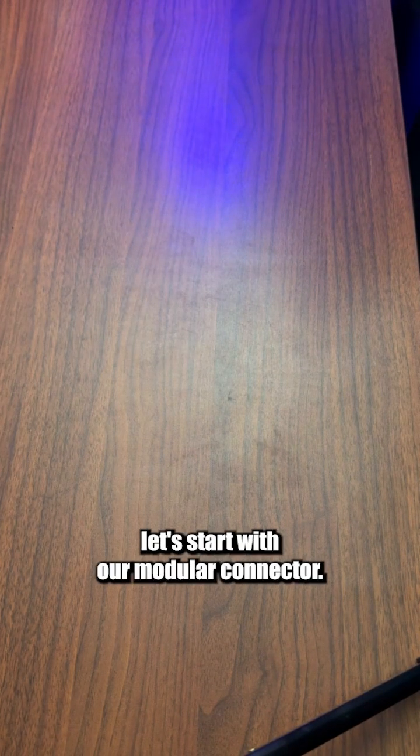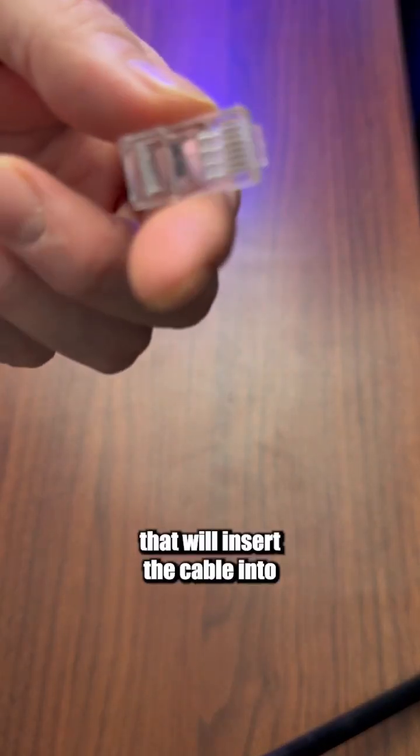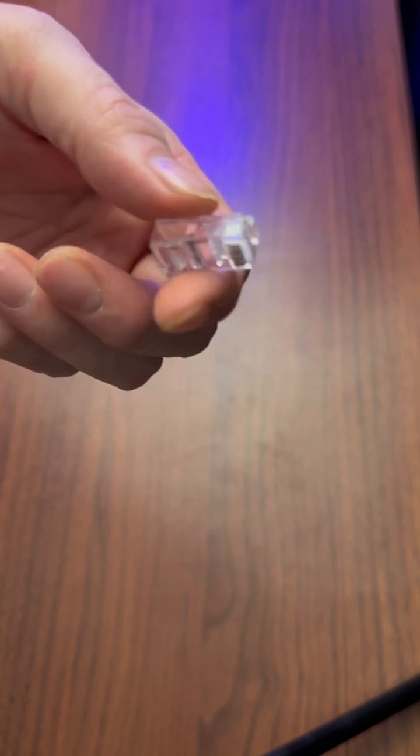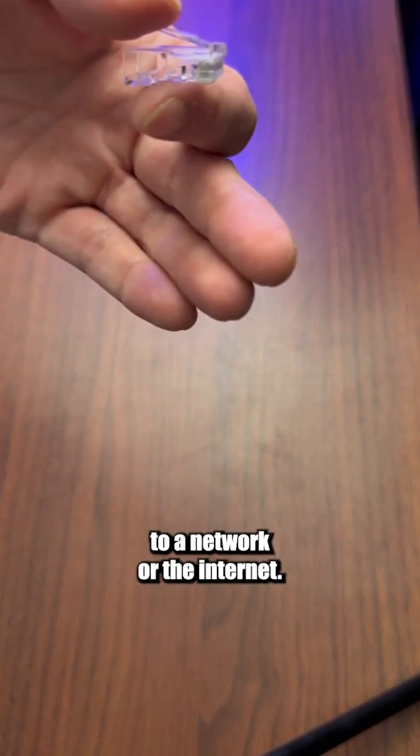Well, first, let's start with our modular connector. The modular connector is going to be a clear piece of acrylic that we'll insert the cable into with a color-coded setting that will allow us to plug this cable into data devices and have it connect to a network or the internet.